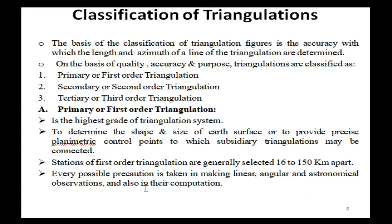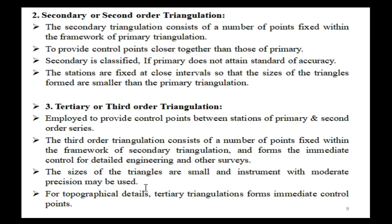Stations of first order triangulation are generally selected 60 to 150 km apart. Every possible precaution is taken in making linear, angular, and astronomical observations and in their computation. Secondary or second order triangulation consists of a number of points fixed within the framework of primary triangulation to provide control points closer together. It is classified as secondary if primary does not attain the standard of accuracy. Stations are fixed at closer intervals, so the sizes of the triangles formed are smaller than in primary triangulation.